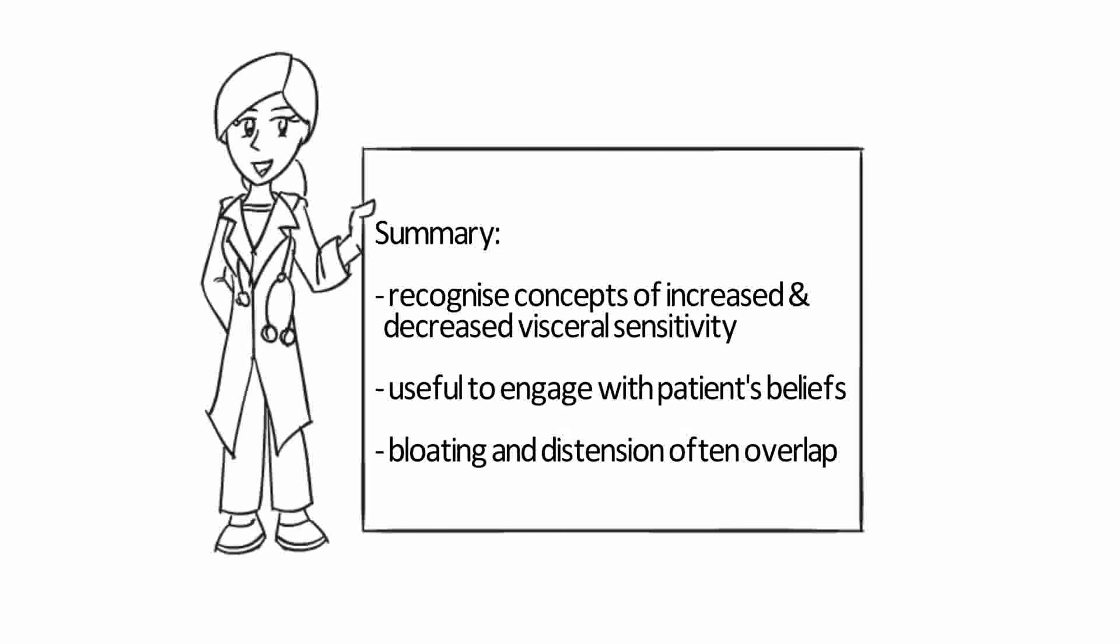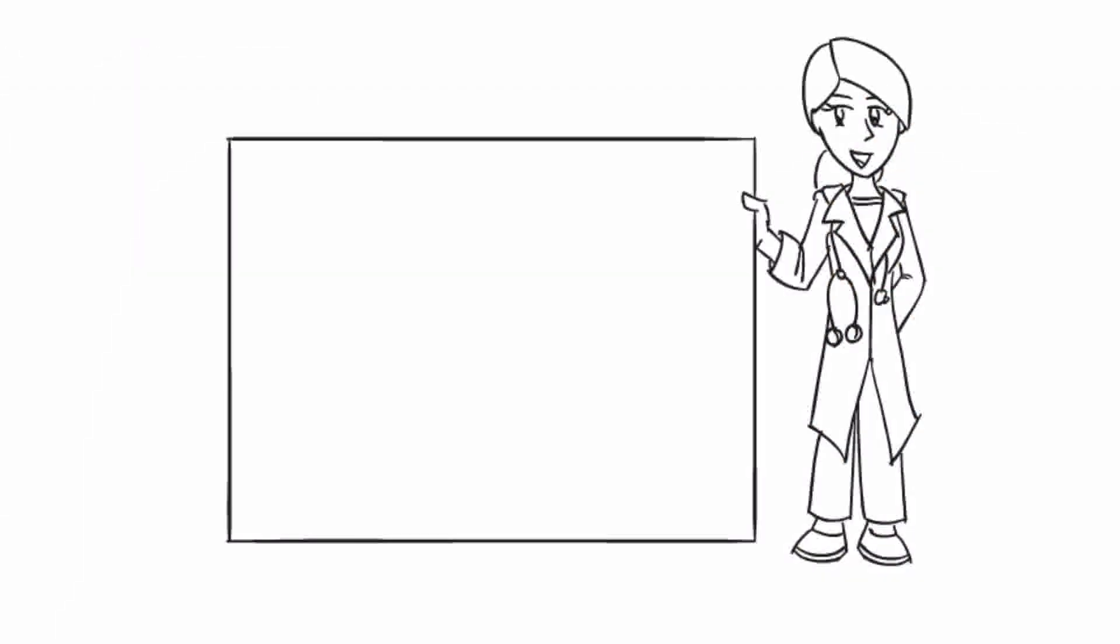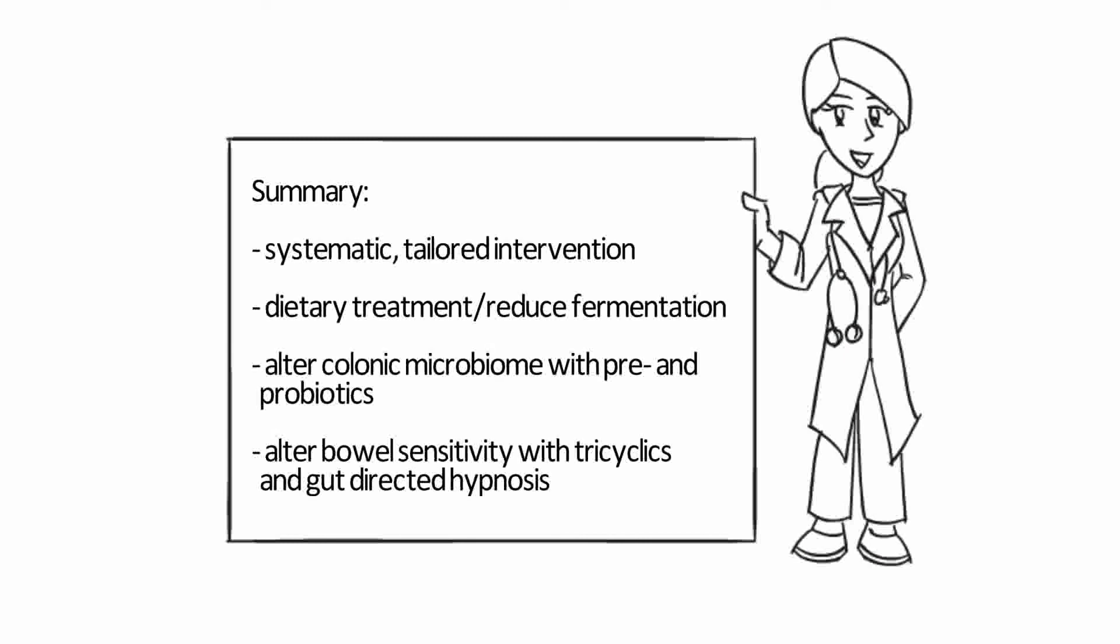Whilst there seems to be logical pathway for dominant bloating or distension, the symptoms often overlap, and for most patients, treatment requires a systematic and tailored sequence of interventions that might include dietary manipulation designed to reduce colonic fermentation, attempts to alter the colonic microbiome with pre- and probiotics, and strategies to redress abnormal visceral sensitivity and awareness using tricyclic therapy and gut-directed hypnosis.